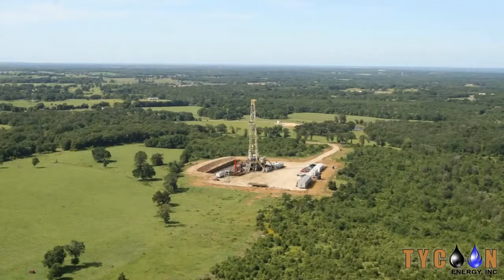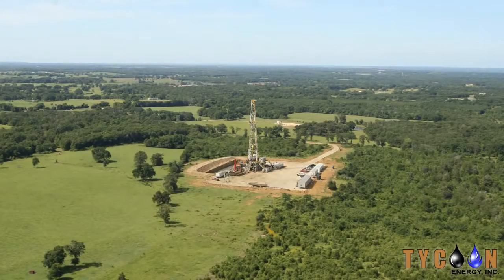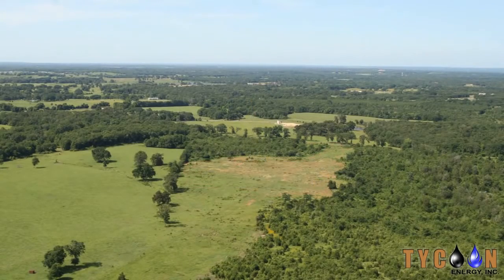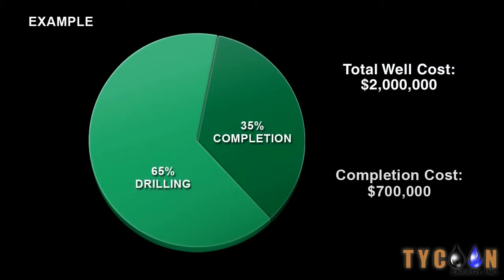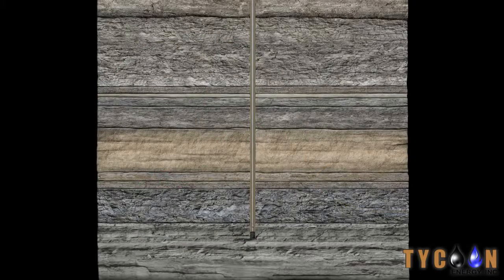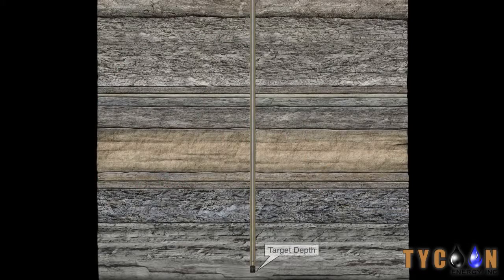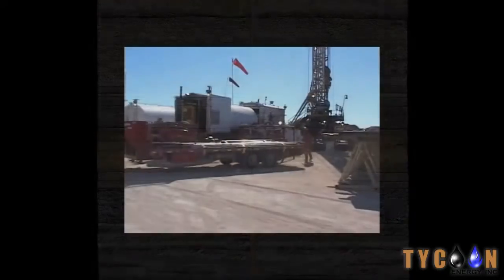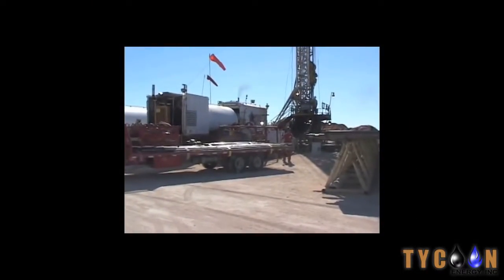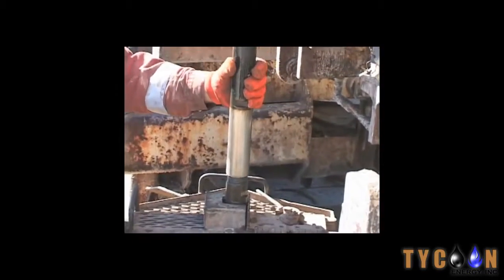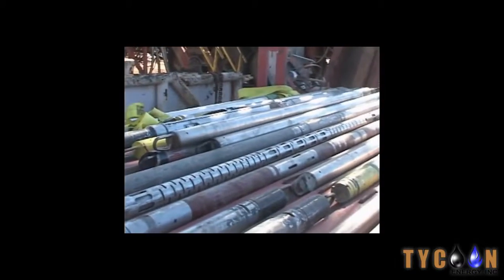If the well is not promising, the process can be stopped and the well abandoned before incurring the large costs of completing the well. Once the well has been drilled to its target depth, the drill pipe and bit are removed from the hole. A specialized logging crew and equipment are brought on location.